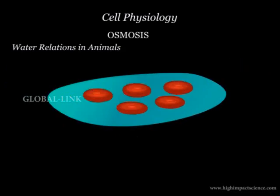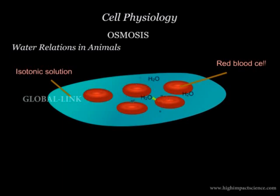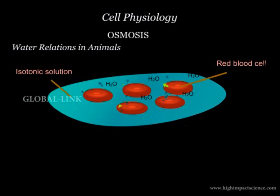When placed in an isotonic solution, there would be no net movement of water in or out of the cells, so there will be no observable change. Body cells must always be in a state of isotonicity with the surrounding fluids so as to avoid influx or outflux of water.